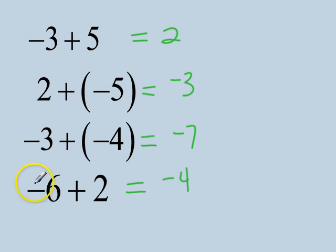When that happens, what you'll notice is you're actually subtracting. 5 minus 3 gives you 2, 5 minus 2 gives you 3, and 6 minus 2 gives you 4.